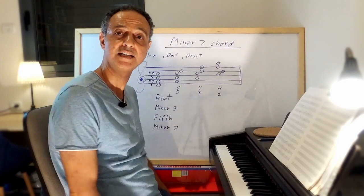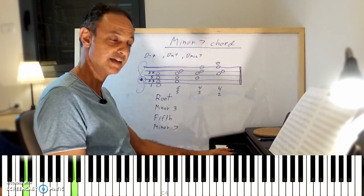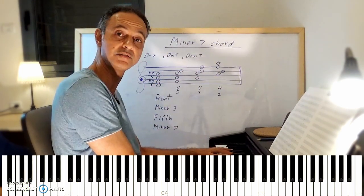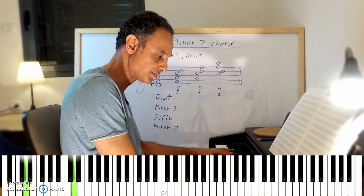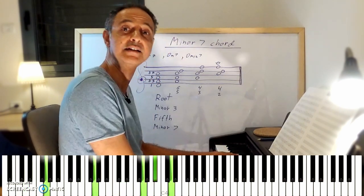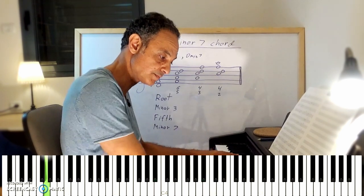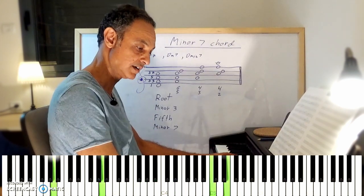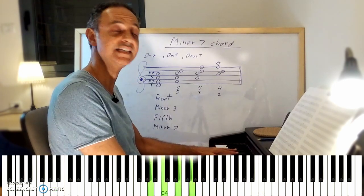Sometimes it's also nice to play the root with your left hand, and with your right hand to play the inversions. Going to G-7 and playing the same thing. Going to A minor seven. And back to D minor seven.